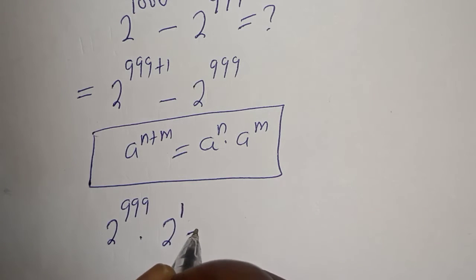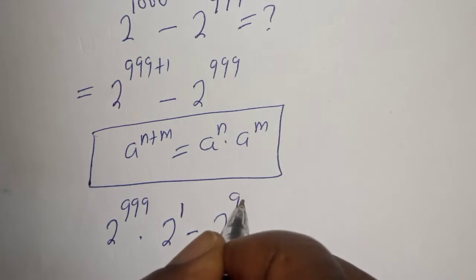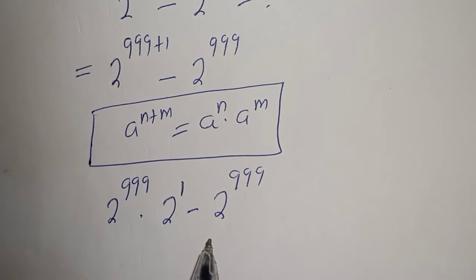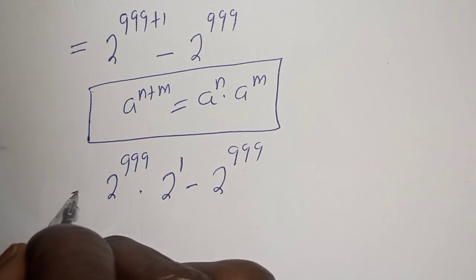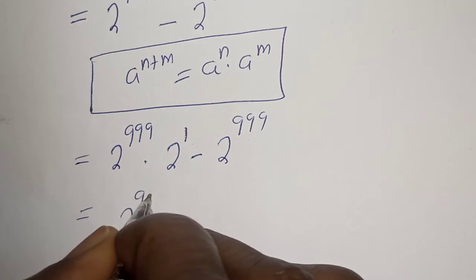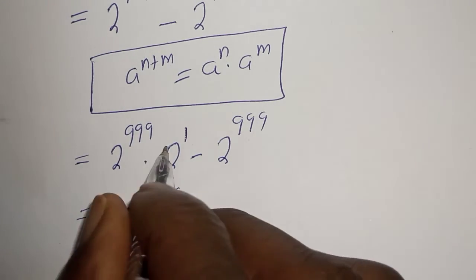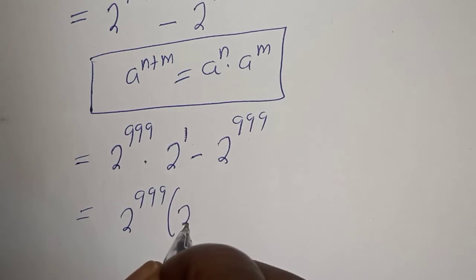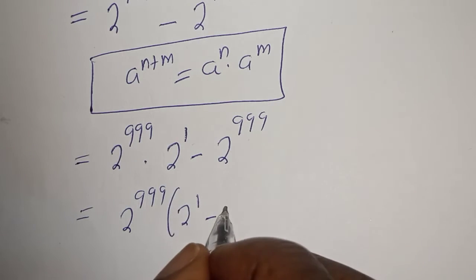Minus 2 raised to power 999. You can see that 2 raised to power 999 is common, let's bring it out. 2 raised to power 999 in brackets: this divided by this we have 2 raised to power 1, minus this divided by this, 1.